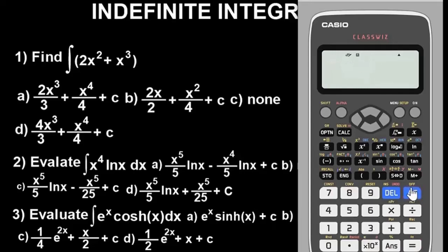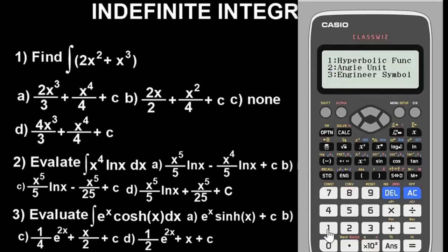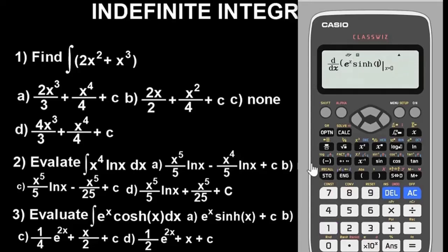Now let's differentiate the options. Press Shift and the integral sign. For option A: e^x · alpha(x), then hyperbolic function — go back to option 1 (hyperbolic), press 1 for sinh, then alpha(x) for x. Close brackets. Check balance: one-two on each side — balanced. Substituting the stored value of 2 gives a result that does not match 7.79, so option A is not correct.